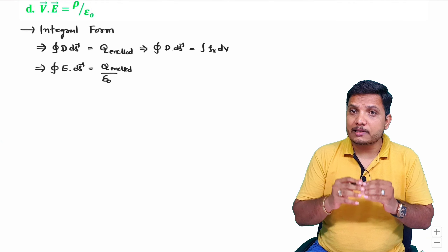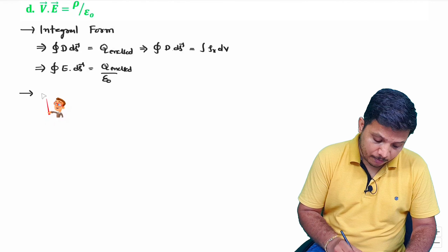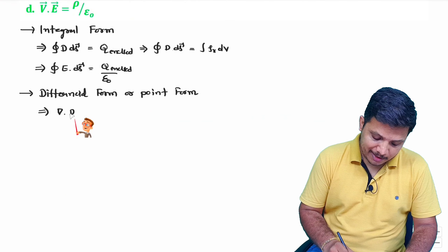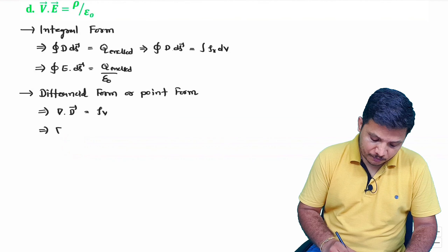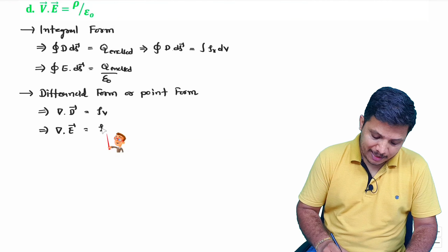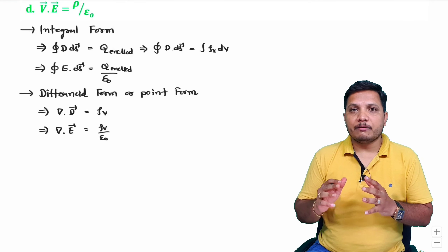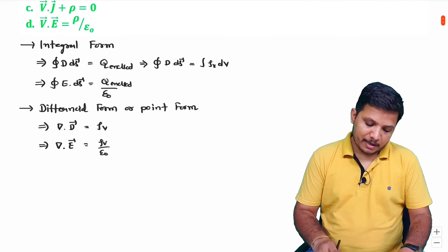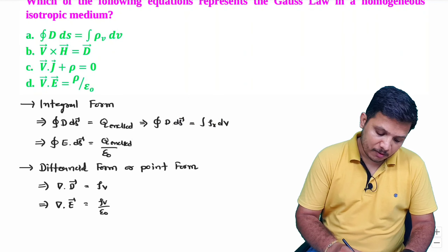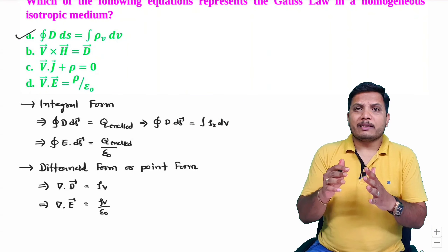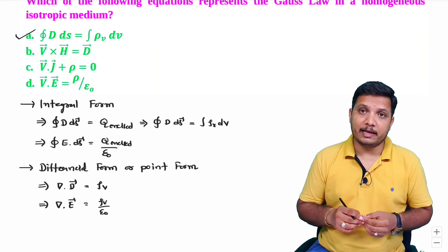Based on Gauss's law for electric field, Maxwell derived the differential form, also called the point form. As per the point form, we can say del dot D equals rho v, and in terms of electric field similarly. That is how two equations are there based on Gauss's law for electric field. We just need to see the options — the correct answer is this one. Whenever this type of question comes, you can directly answer it, but here I am discussing the basics for better understanding.